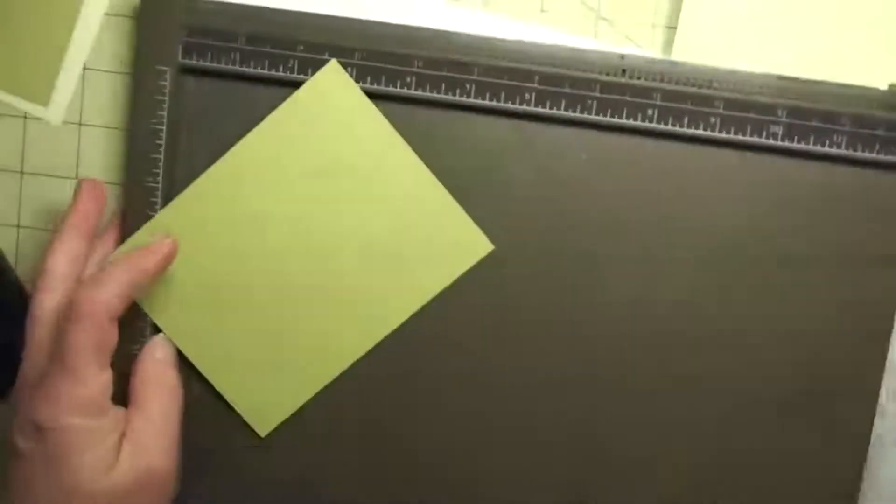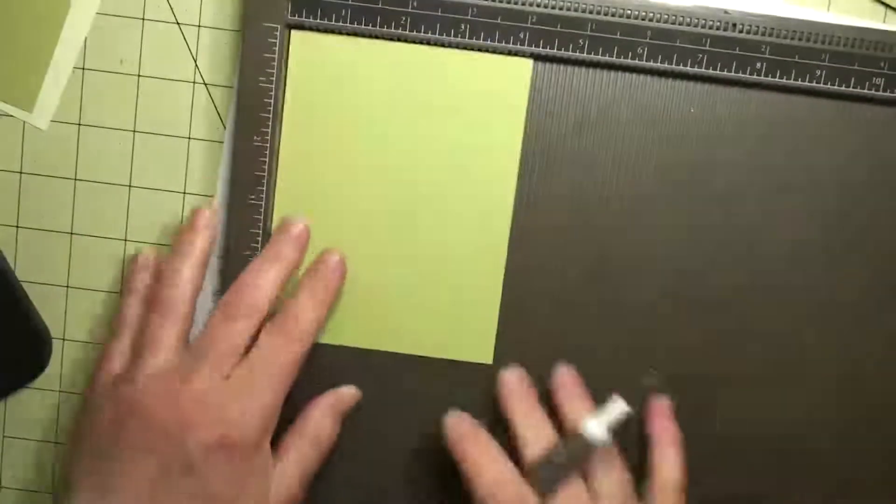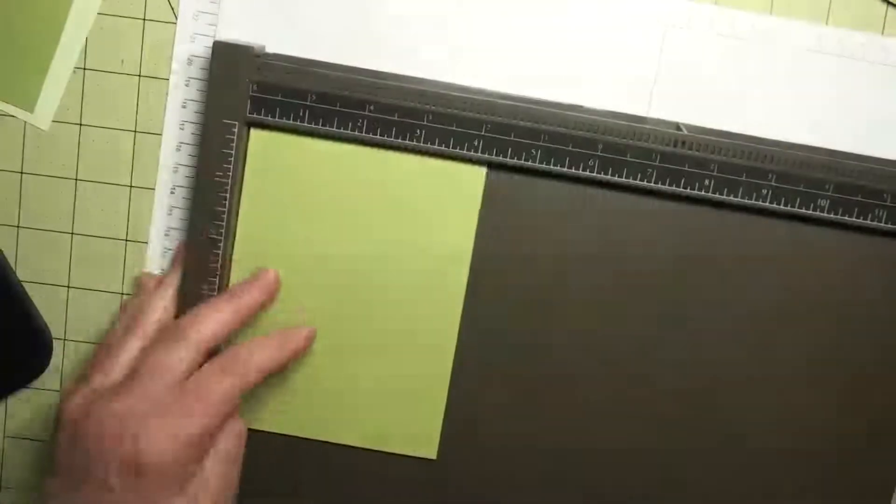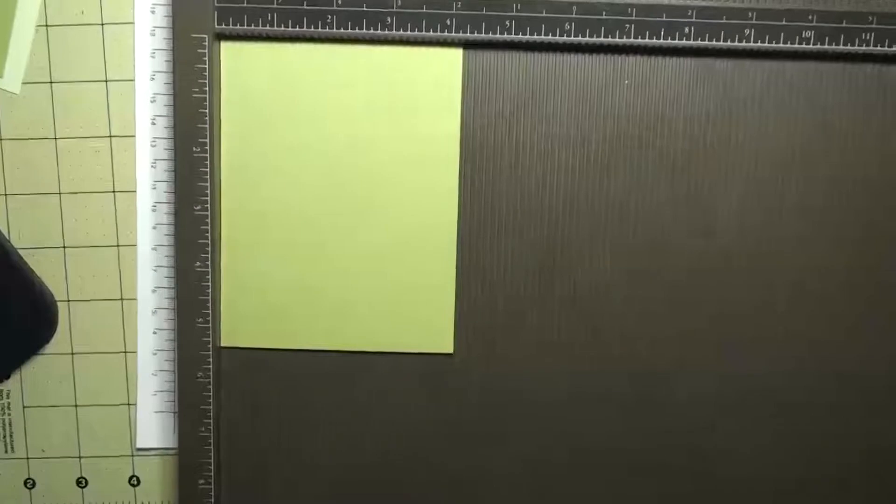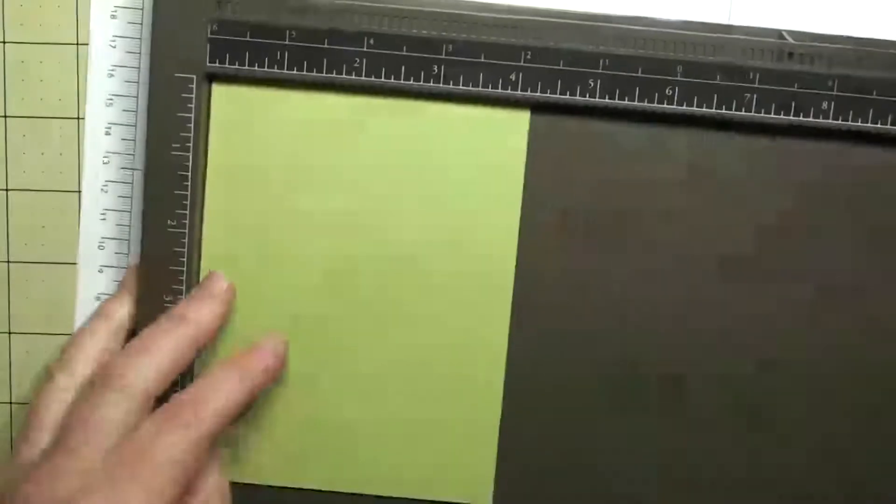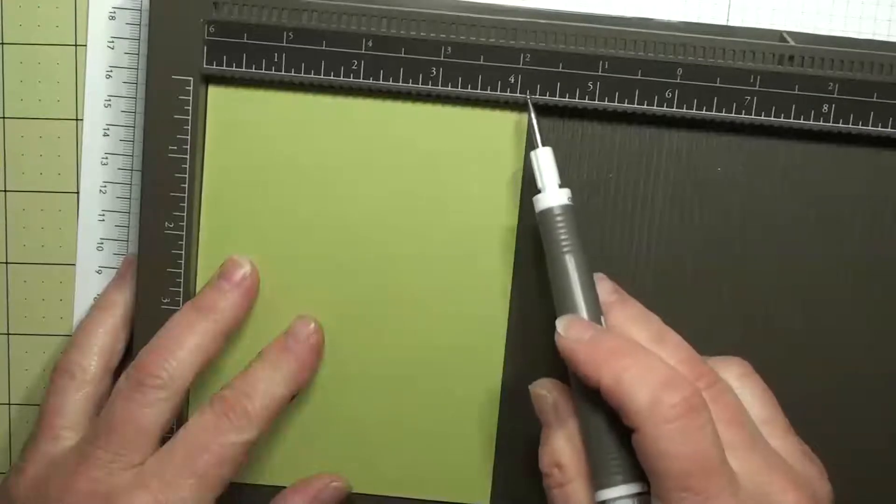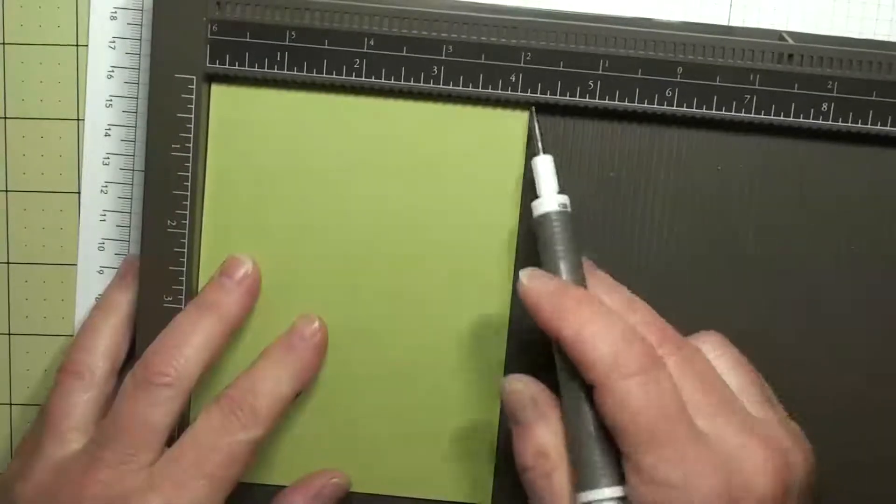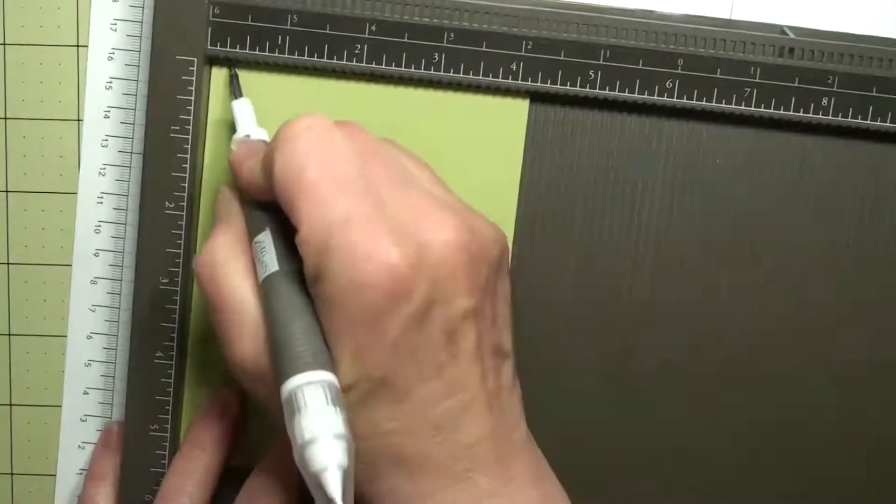Okay, and then we want to take this piece that I said was a sixteenth of an inch smaller than four and a quarter by five and a half, and you can see right here it's right between the four and an eighth and four and a quarter.